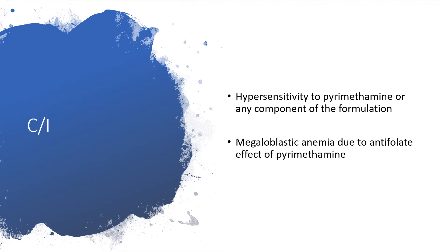Contraindications: hypersensitivity to pyrimethamine or any component of the formulation — don't give it. In the face of megaloblastic anemia due to antifolate effects — don't give it. Once the features seen on peripheral blood smear are that of megaloblastic anemia, if you have not established whether it is due to vitamin B12 deficiency or folate deficiency, avoid using it. But it would be better to have a specific diagnosis.